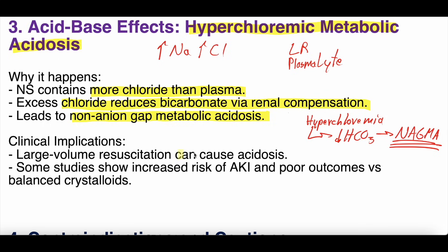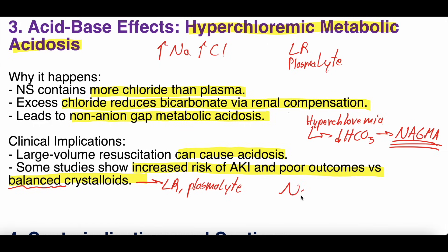Large volume resuscitation with normal saline can cause acidosis. Some studies show increased risk of acute kidney injury and poor outcomes in the normal saline group compared to balanced crystalloids like lactated ringers and plasmalyte. So be careful in patients who are acidotic. At 154 milliequivalents of sodium and chloride, normal saline can lead to this acidosis — so you've got to be really careful.